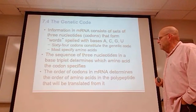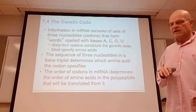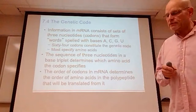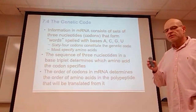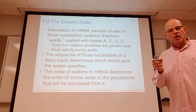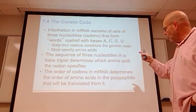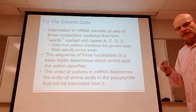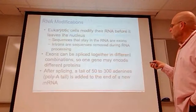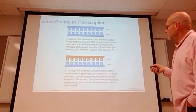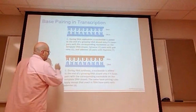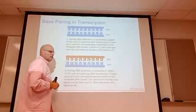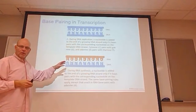The sequence of three nucleotides in a base triplet determines which amino acid the codon specifies. There are 64 different three-base combinations, and most code for a specific amino acid. The order of codons in the messenger RNA determines the order of amino acids in the polypeptide that will be translated from it.